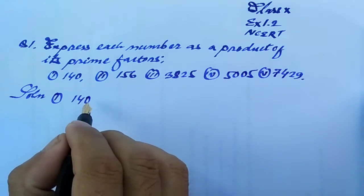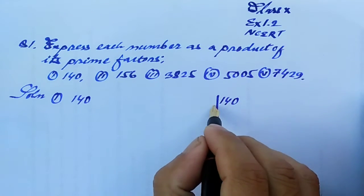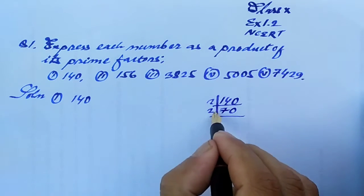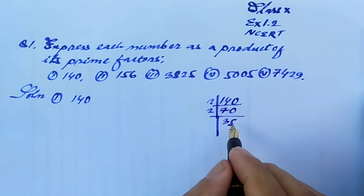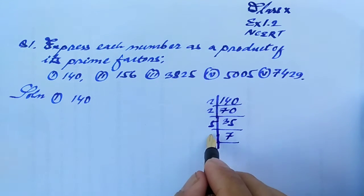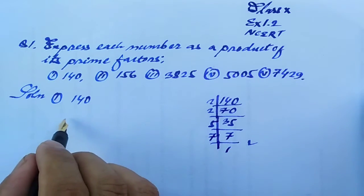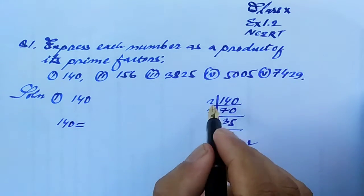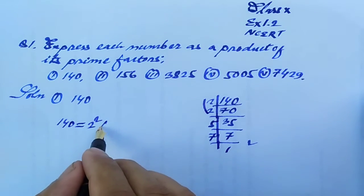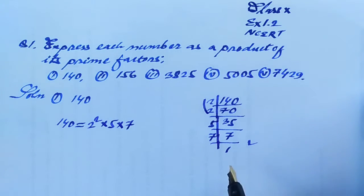Let us come to solution number 1, that is 140. Let us take the prime factorization of 140. 140 is divisible by 2, giving 70. 2 into 35 is 70. Then 5 into 7 is 35. Finally 7 into 1. We have completed the factorization, so 140 is equal to 2 squared into 5 into 7.